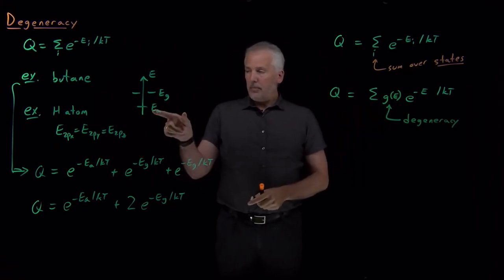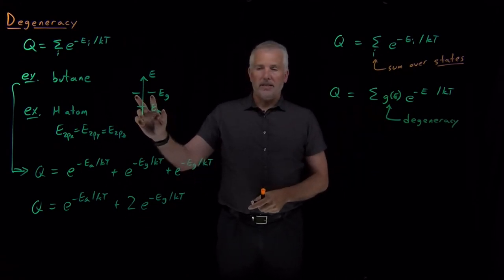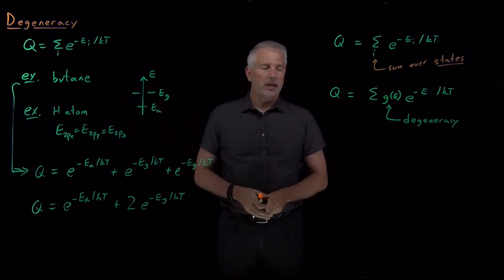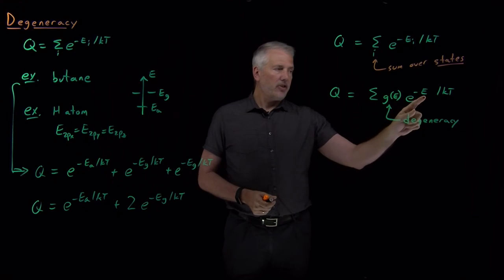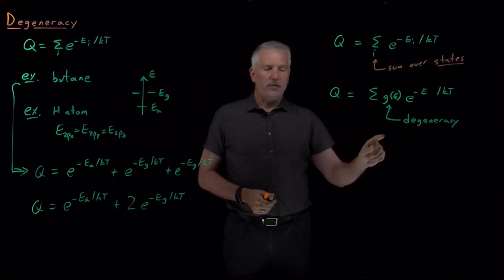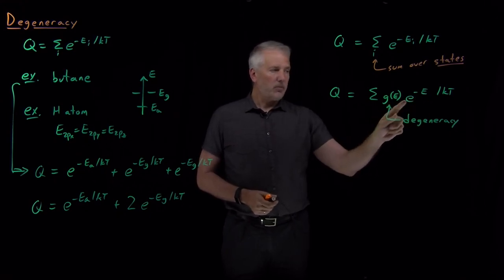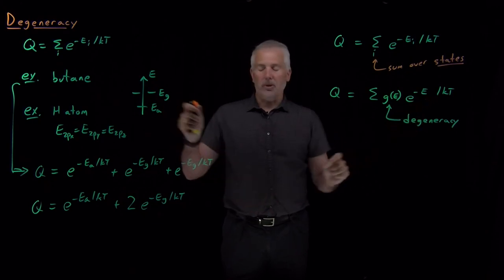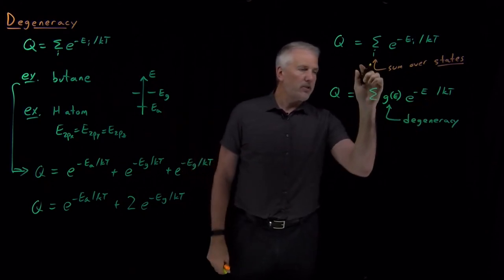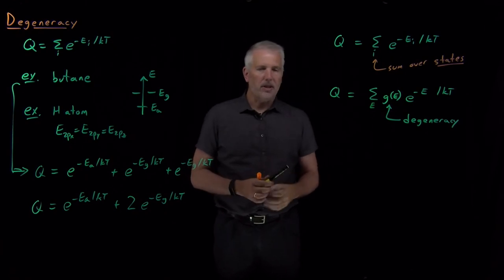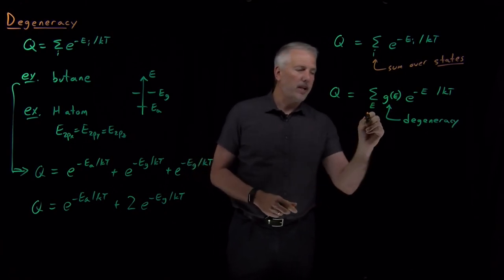If a state is degenerate, meaning if there's more than one state that has the same energy, if that energy level is degenerate with two different states having the same energy level, then I can write just e to the energy. Don't worry about the index for the different states, and just multiply that energy. The Gauche energy gets multiplied by two. Now, instead of summing over all the states of the system, I'm just going to sum over all the possible energies that the system can have.